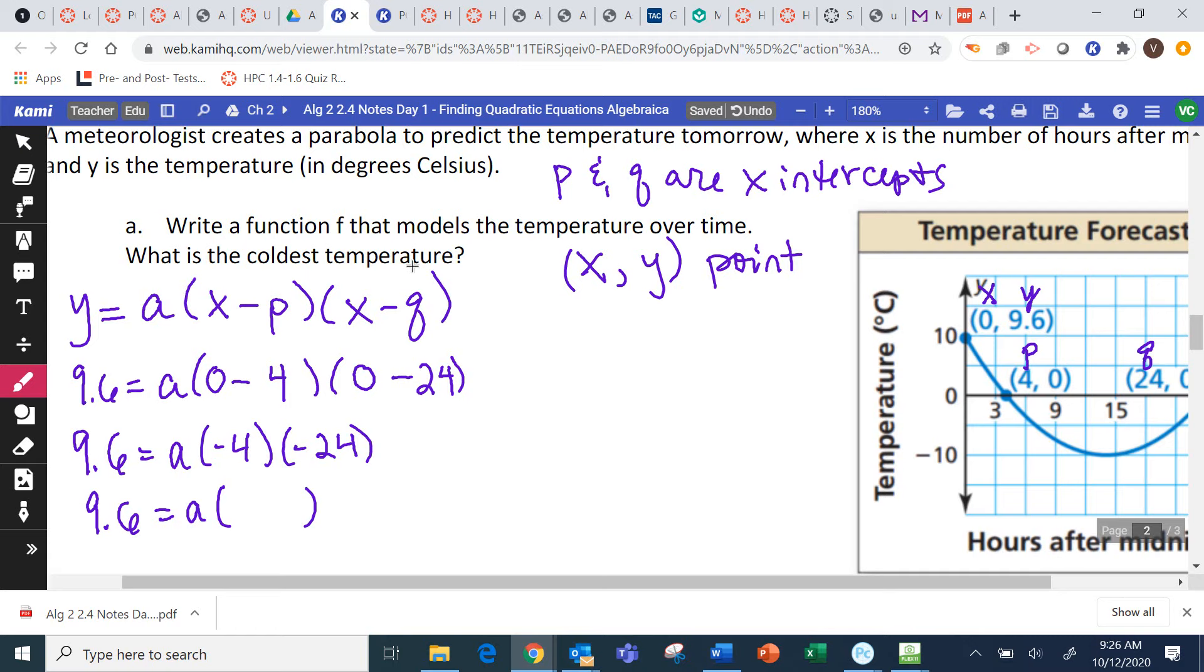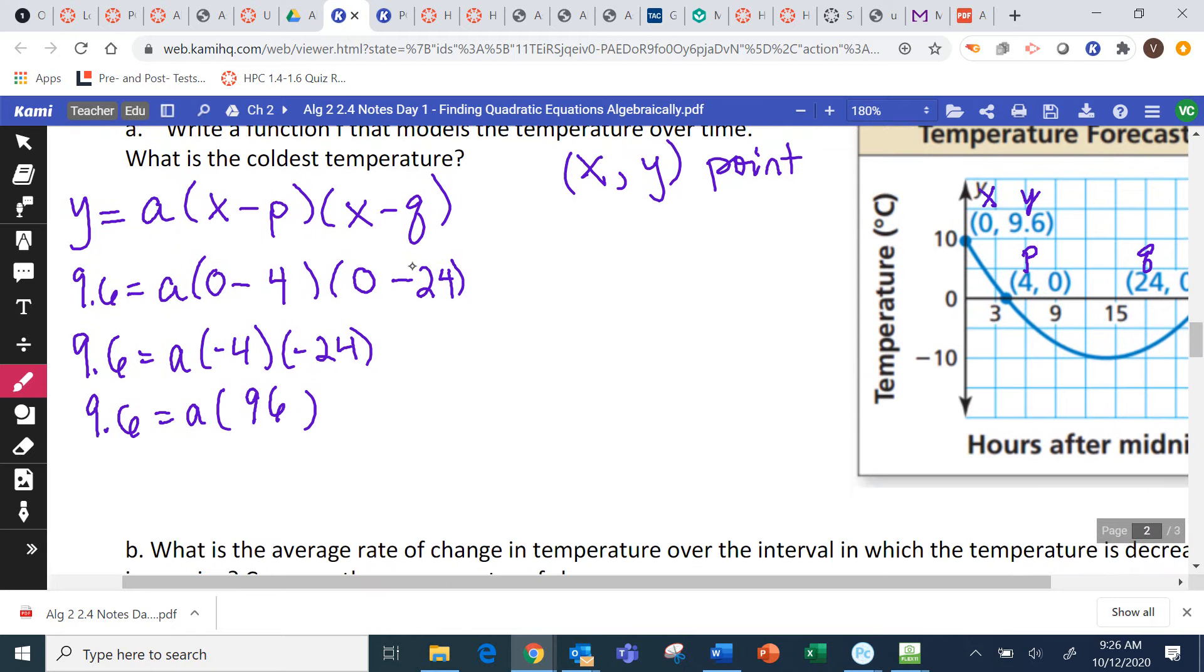So, I have 9.6 equals A times negative 4 times negative 24. Pauline, can you tell me negative 4 times negative 24? So, I have 9.6 equals 96A. Divide both sides by 96. Jaden, can you tell me what you get? 0.1. 0.1.